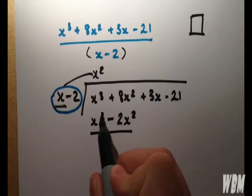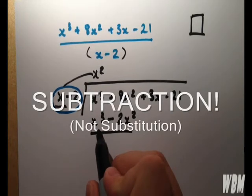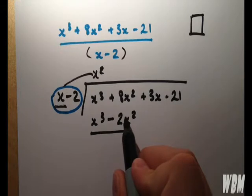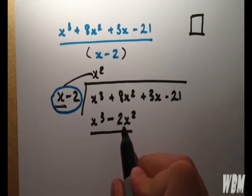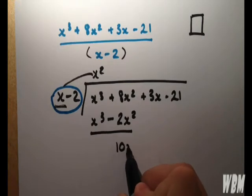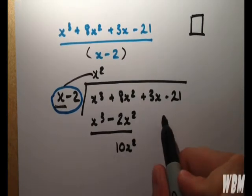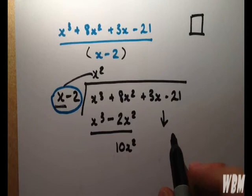And now we simply do the substitution. So we have 0 here. And we have 8 minus minus 2, which is 8 plus 2, which is 10x squared. And now we drop down the rest of the equation.